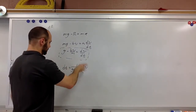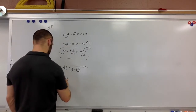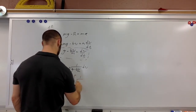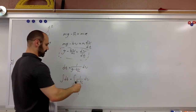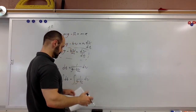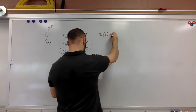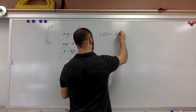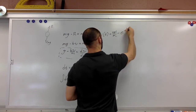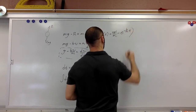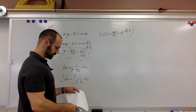Integrating both sides of that differential equation, we obtain the velocity as a function of time: v(t) equals mg over b times the quantity 1 minus e to the negative b over m times t. You're going to see that form of the equation again and again, so get used to it.